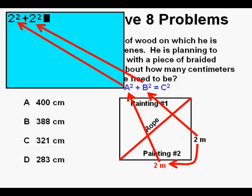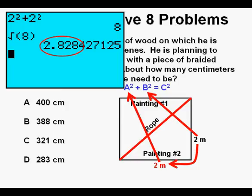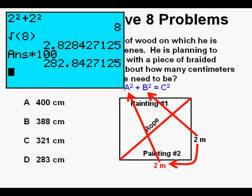And here it is entered in the calculator. And that means that C squared is 8. To find C or the length of the braided rope you take the square root of 8. And that number is about 2.83 meters. But all of our answers are in centimeters. So to convert meters to centimeters all we have to do is multiply by 100. And that gives us about 283 centimeters. And this is where we find it amongst our answers. And we circle our correct answer D.